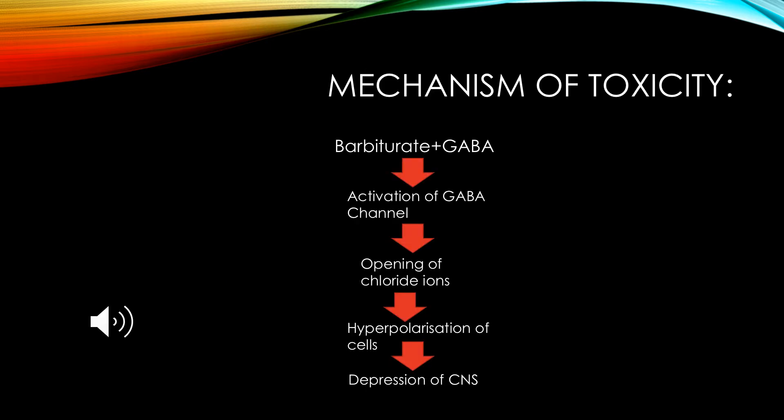Regarding the mechanism of barbiturates: they bind to and activate the GABA receptor. Once the GABA receptor is activated, it leads to the opening of chloride ion channels. The excess influx of chloride ions causes hyperpolarization of cells, which ultimately results in depression of the CNS.